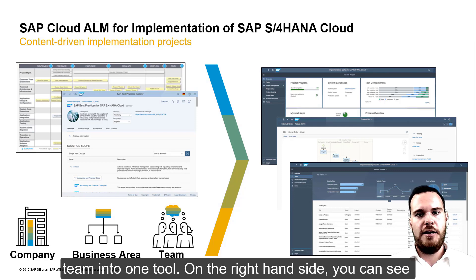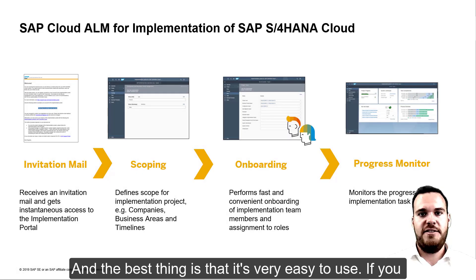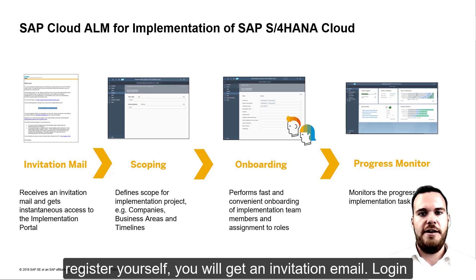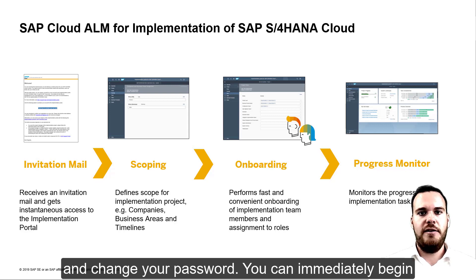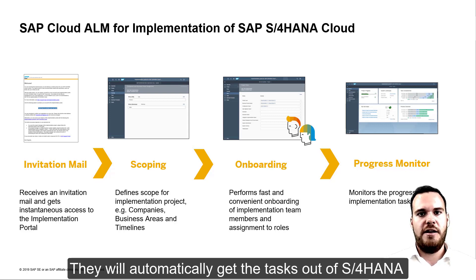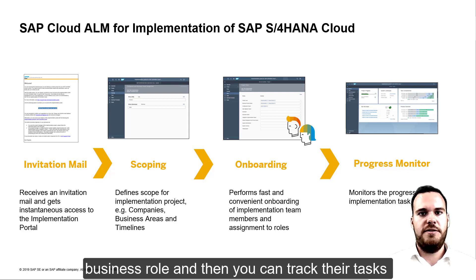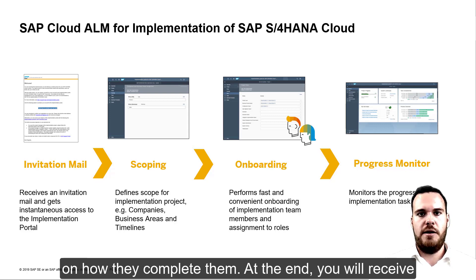On the right-hand side, you can see how it looks — it transforms into charts, milestone overviews, and task views. And the best thing is, it's very easy to use. If you register yourself, you'll get an invitation email, login, and change your password. You can immediately begin scoping your solution and assigning project team members. They will automatically get the tasks from the S4HANA Cloud Activate methodology that are assigned to their business role, and then you can track their tasks as they complete them.